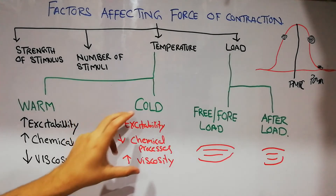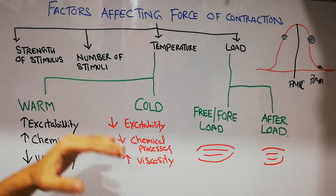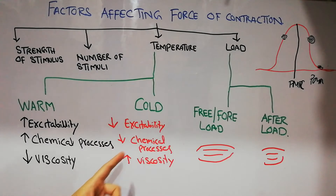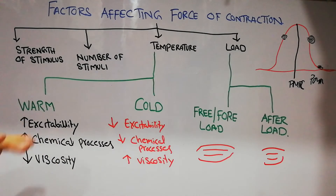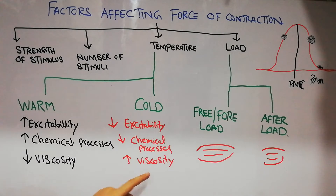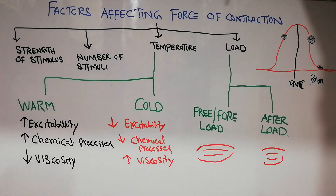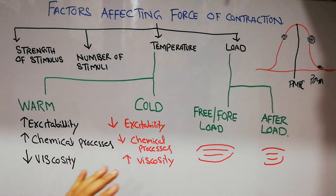The same factors will decrease in cold temperature. In cold temperature the force of contraction decreases because the muscle is less excitable. The chemical processes inside the muscles decrease, so less energy is formed and fewer chemicals are interacting. Additionally, the viscosity of the muscle increases, and the more viscous the muscle, the less the contractility.